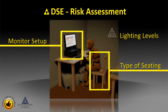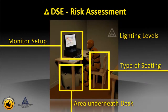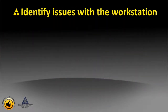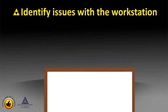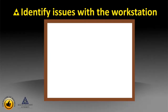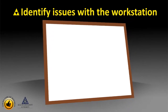In terms of the desk, the area underneath it and how that prevents access to the computer workstation. As part of the risk assessment, the assessor will talk to the employee and explain what they are trying to do. The second part of the risk assessment will be to identify the issues with the workstation that need to be addressed.